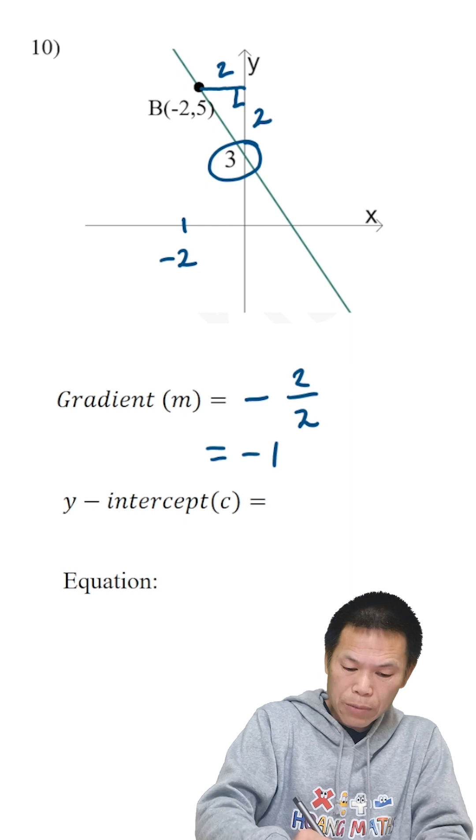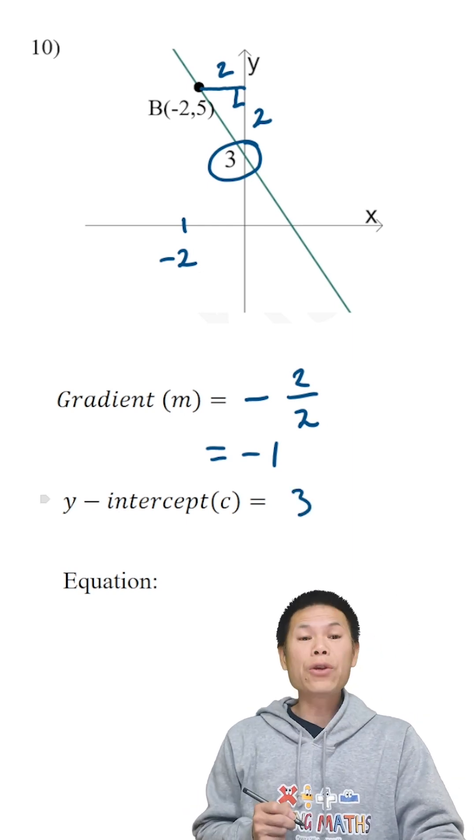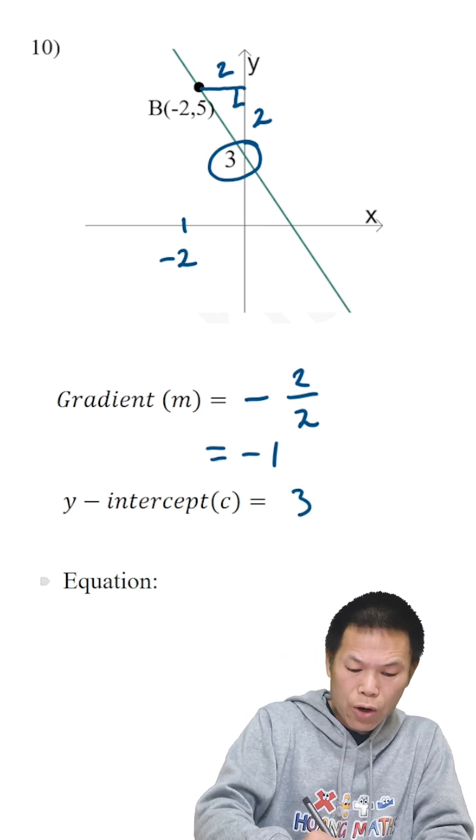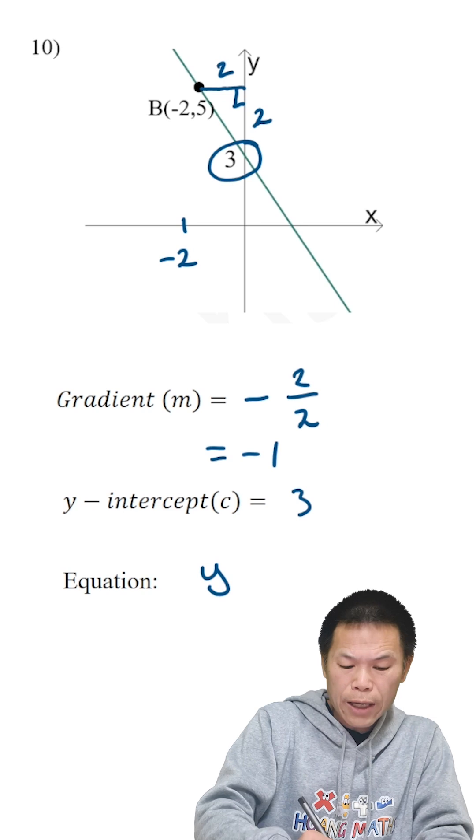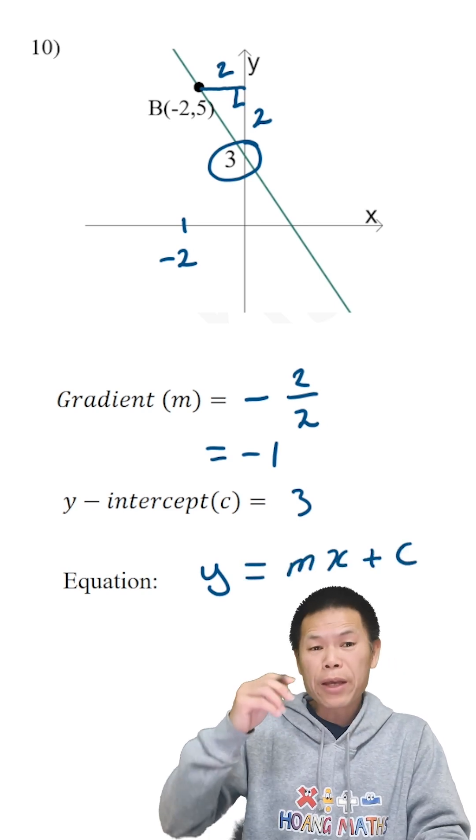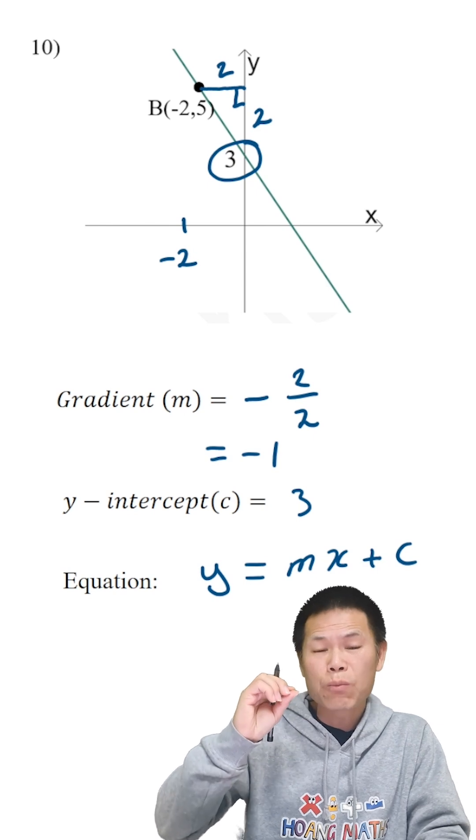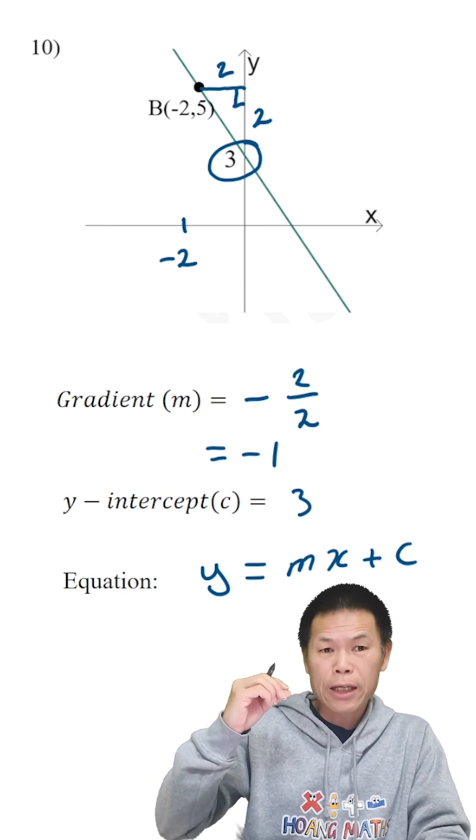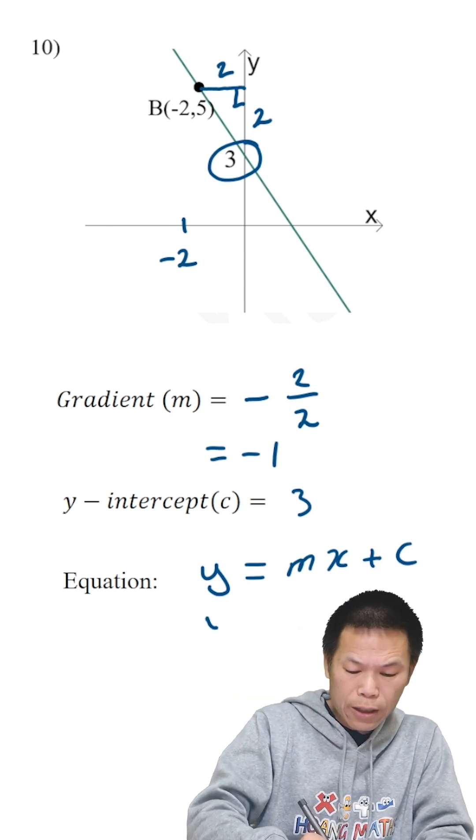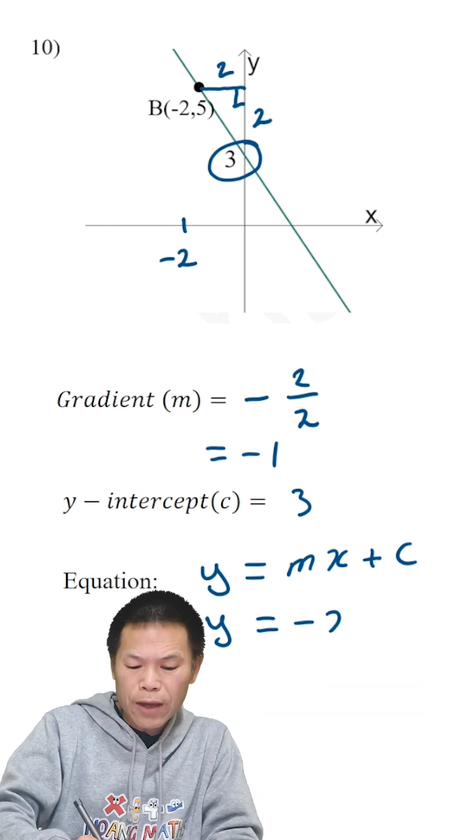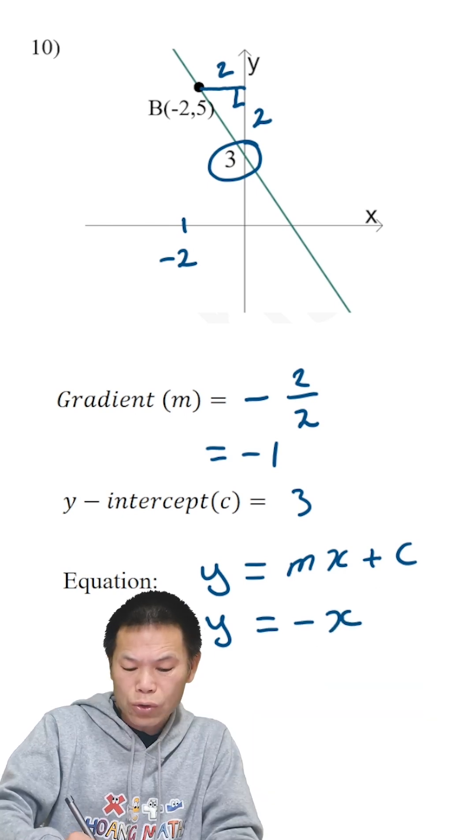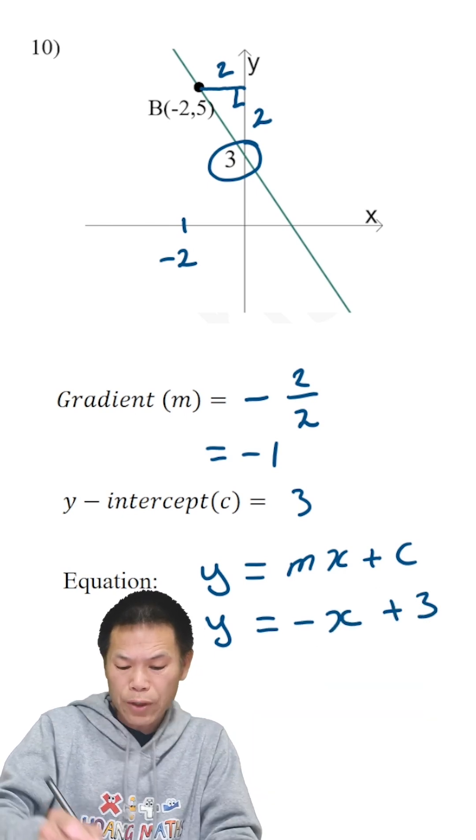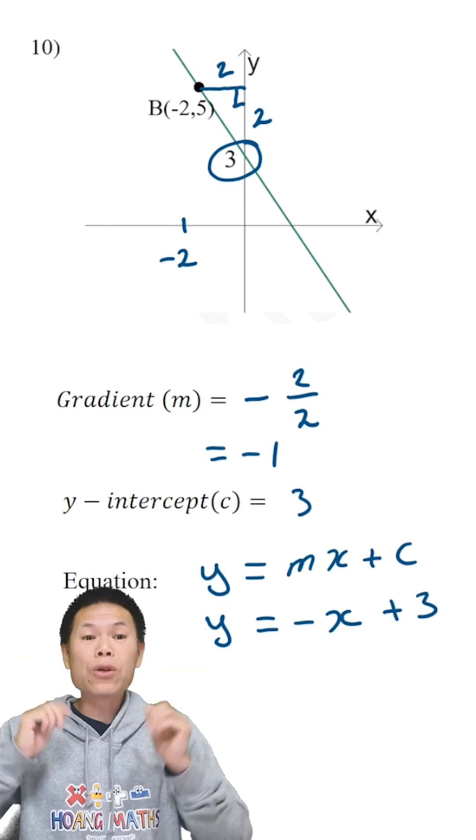Let me just write this down. Therefore we know that the rule is y equals mx plus c. And m is negative 1, so negative 1 times x is negative x. So y equals negative x, and c is 3, which is plus 3. So there you go.